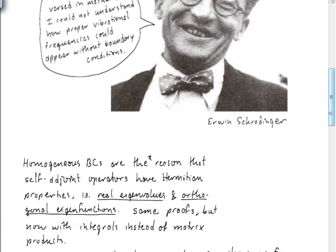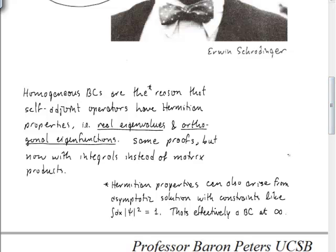And so in Schrodinger's case, the reason he was puzzled is because these properties can also arise from asymptotic solutions to problems that have constraints like orthogonalized, like normalized eigenfunctions or wave functions. And that effectively is a boundary condition at infinity that is giving rise to those problems.